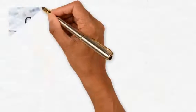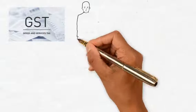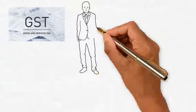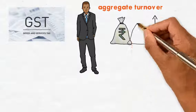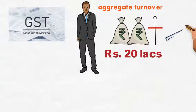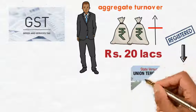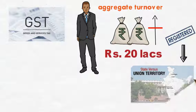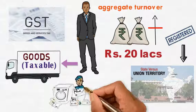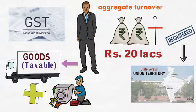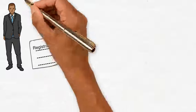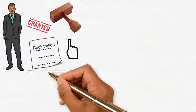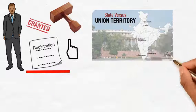Under the Goods and Services Tax (GST), every person whose aggregate turnover in a financial year exceeds Indian Rupees 20 lakhs shall be liable to be registered in the state or union territory from where he makes taxable supply of goods or services or both. Further, a person seeking registration shall be granted a single registration in the state or union territory.